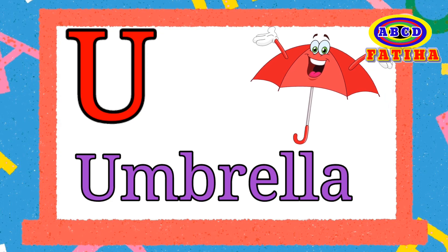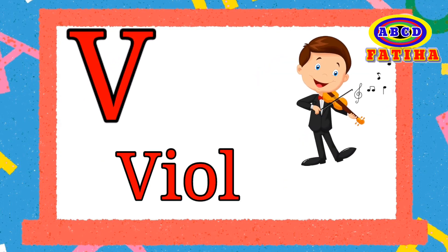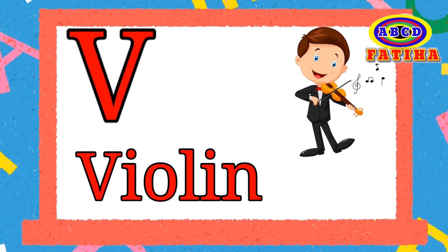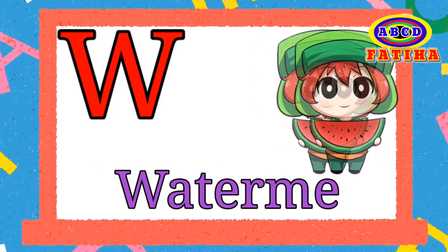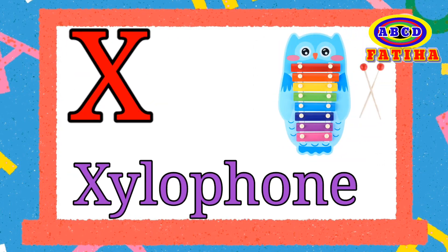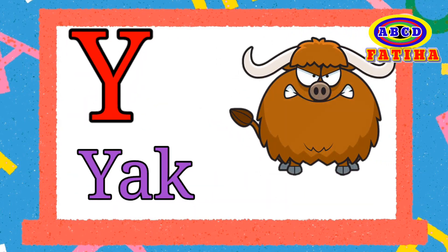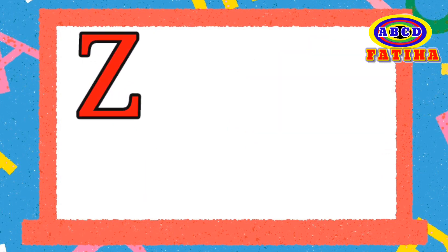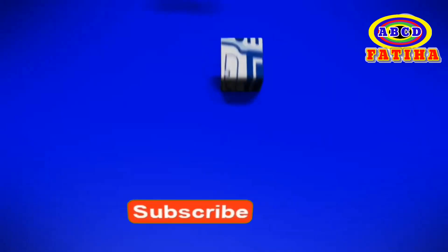U for Umbrella. V for Violin. W for Watermelon. X for Xylophone. Y for Yak. Z for Zebra.